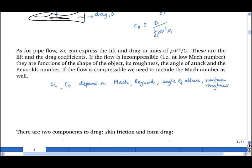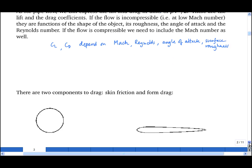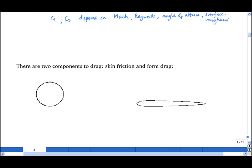Now I'm going to focus here on drag, and there are two components to drag: skin friction and form drag. We've met them both already. Skin friction is the momentum of the free stream that is lost through the boundary layer, and the form drag is caused by separated boundary layers, and it is due to the low pressure region that is behind a bluff body.